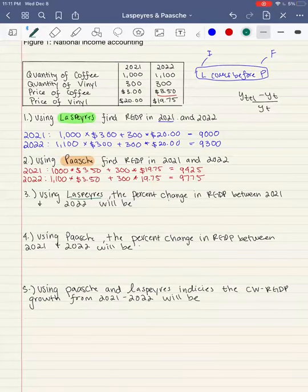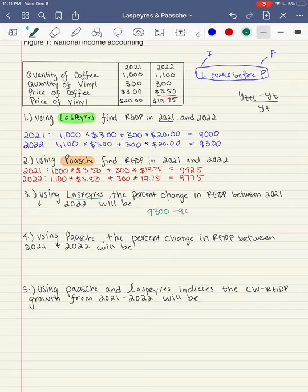So here, what that basically means is that we're going to do 9,300 minus 9,000 over 9,000 to get that growth rate, the percentage change, I should say. So then this is going to give us 0.033 repeated, or we can go ahead and say this is 3.33%.